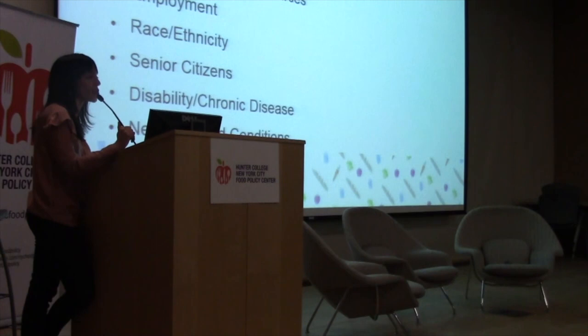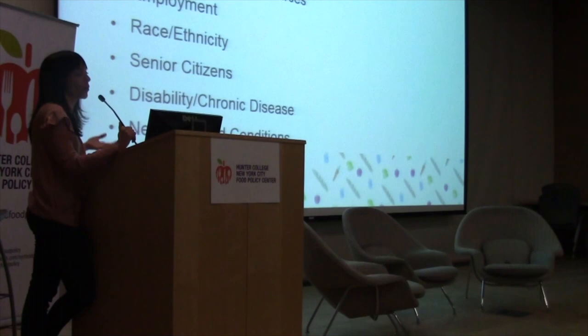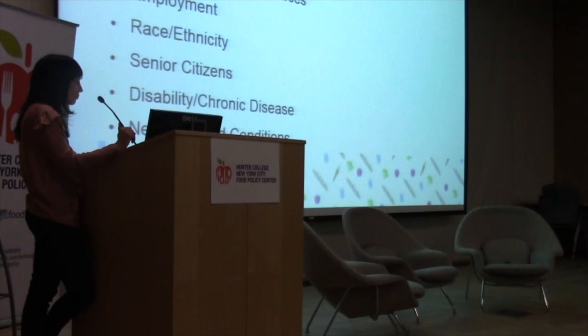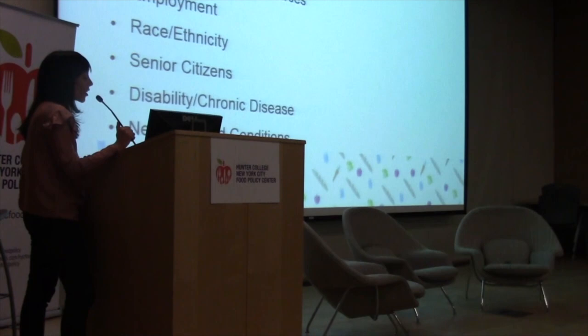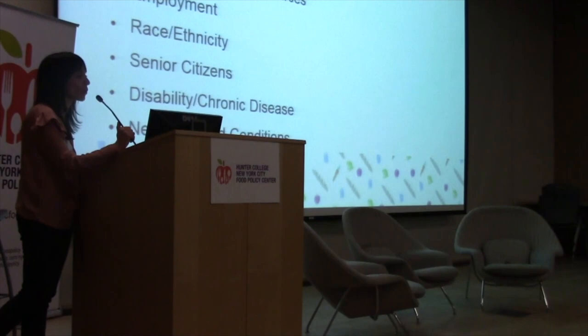Senior citizens and people with disabilities living on fixed incomes often find that if something has to give, it's going to be food. Neighborhood characteristics also matter: what people have access to, the quality of that food, and the pricing in their community are all factors influencing food security.